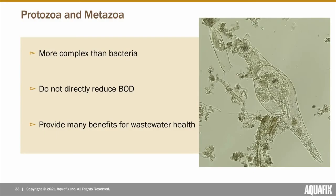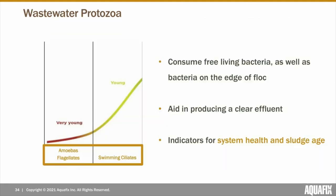Moving on to metazoa and protozoa — these organisms are more complex and much larger than bacteria, but they take up overall less biomass. They're not directly responsible for reducing BOD, but they have many direct and indirect effects on the biology and health of wastewater. Protozoa primarily consume free bacteria, as well as bacteria on the edge of flock, which helps produce a clear effluent. The presence of protozoa can also be used as indicators for sludge age and overall health.